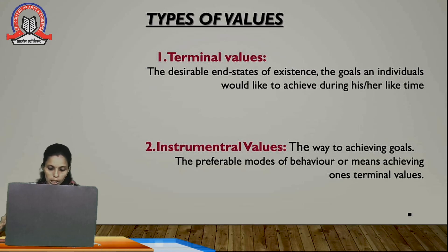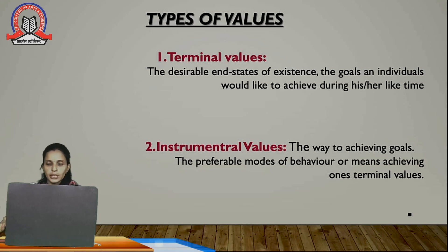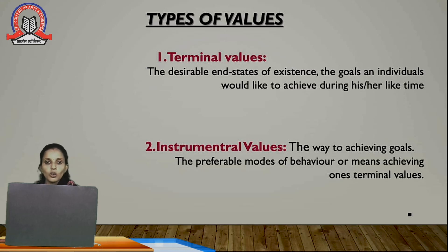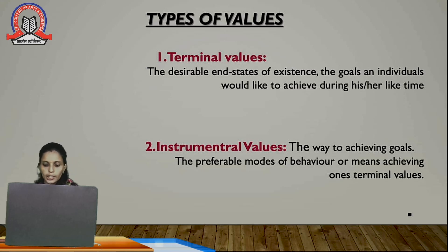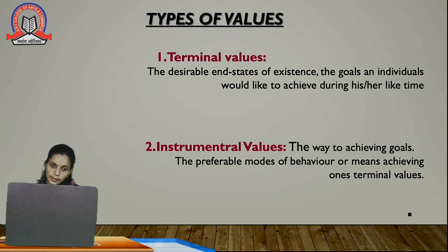The second type is instrumental values. Instrumental values refer to the way of achieving goals. In terminal values, a person decides in what time period they want to achieve a goal; in instrumental values, they decide by which means or path they will achieve that goal. The preferable modes of behavior or means of achieving one's terminal values — these are referred to as means values, while terminal values are end values.